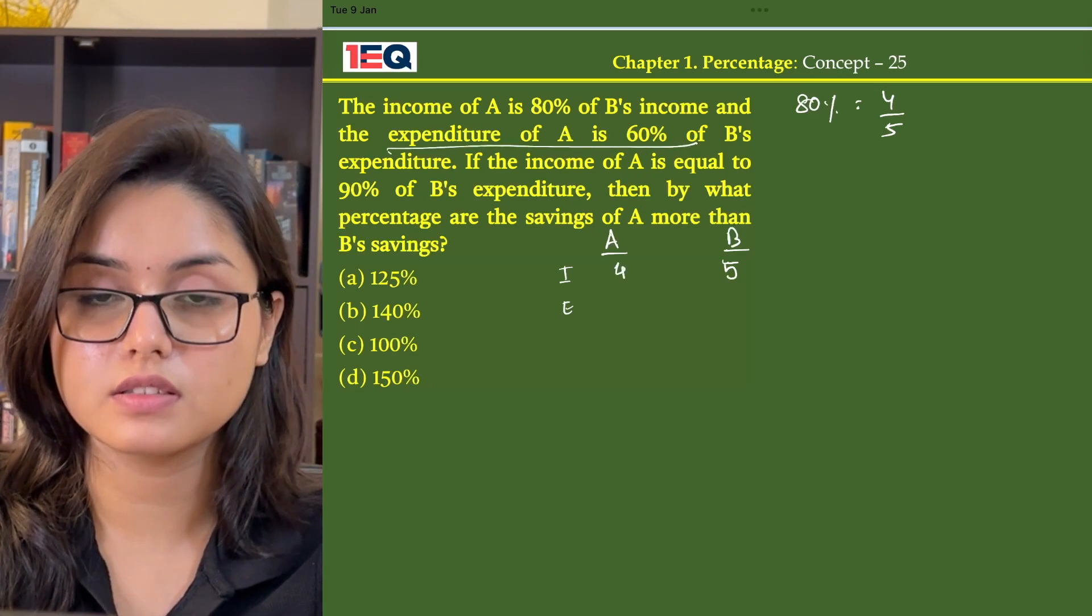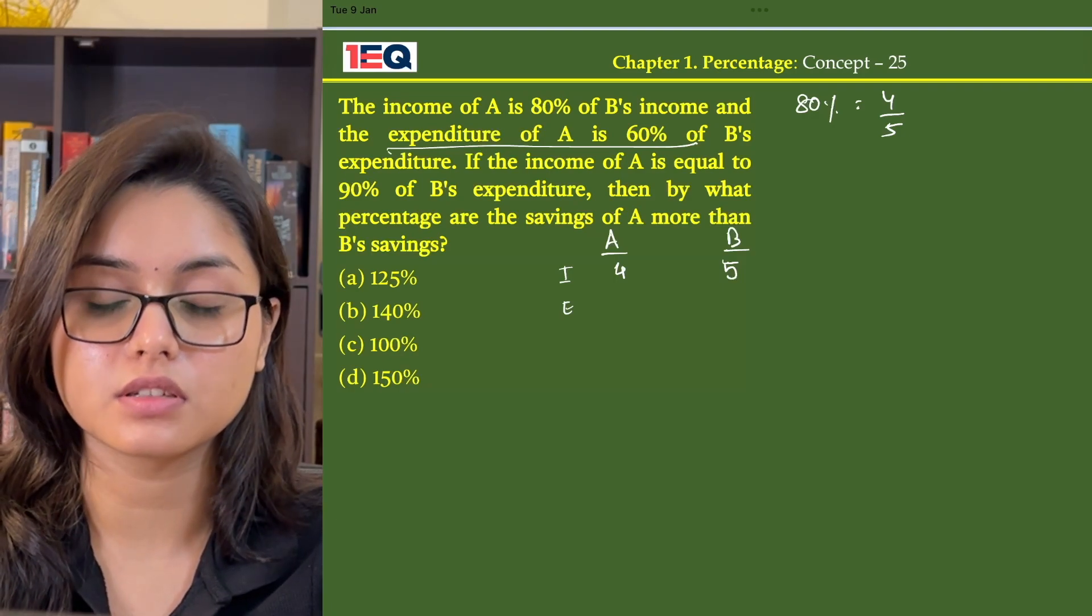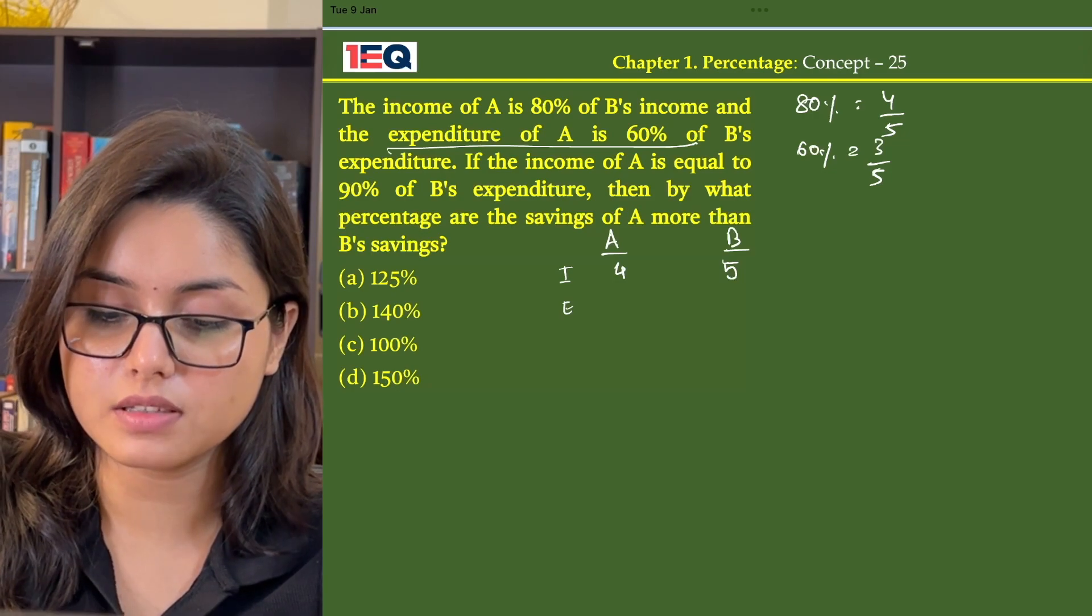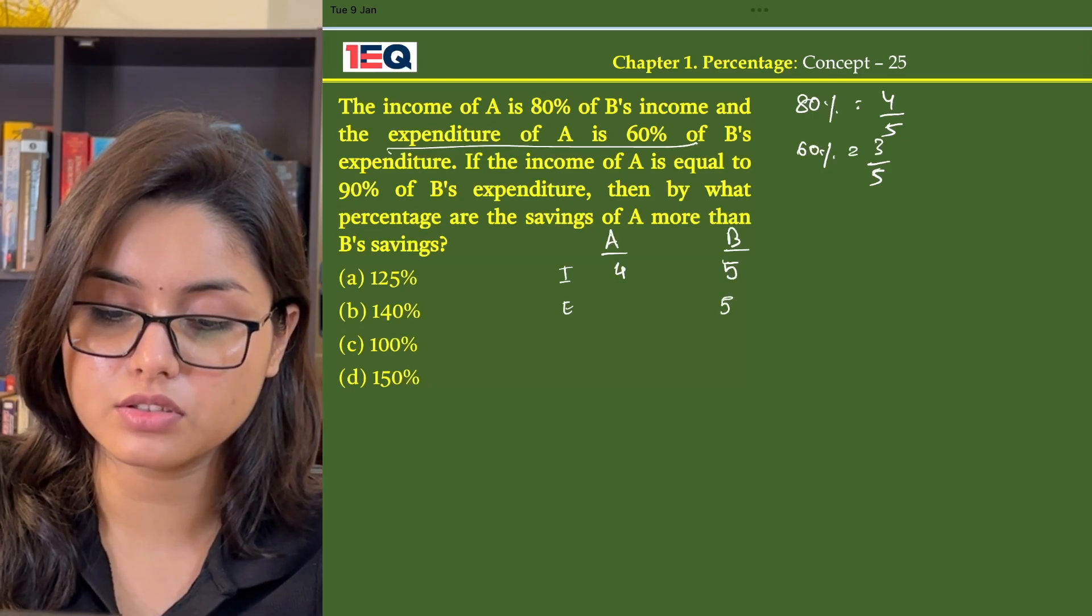The expenditure of A is 60% of B's expenditure, which means 60% equals 3 by 5. So if B's expenditure is 5, A's expenditure will be 3.